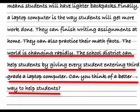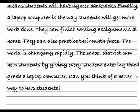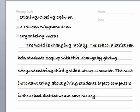For example: 'The world is changing rapidly. The school district can help students by giving every student entering third grade a laptop computer. Can you think of a better way to help students?' Notice that both endings sound like the beginning of the paper. When the ending sentences remind the reader of the beginning sentences, we say it makes a circle. A circle is a complete geometric shape — this completeness is another signal to your reader that your paper is complete.